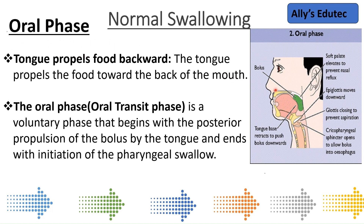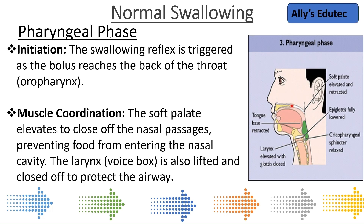Once the oral phase is completed, the swallowing process starts. That phase is called the third phase — the pharyngeal phase. In the pharyngeal phase, the swallowing reflex is triggered, and with that triggering of the reflex the bolus reaches the back of the throat, the oropharynx.